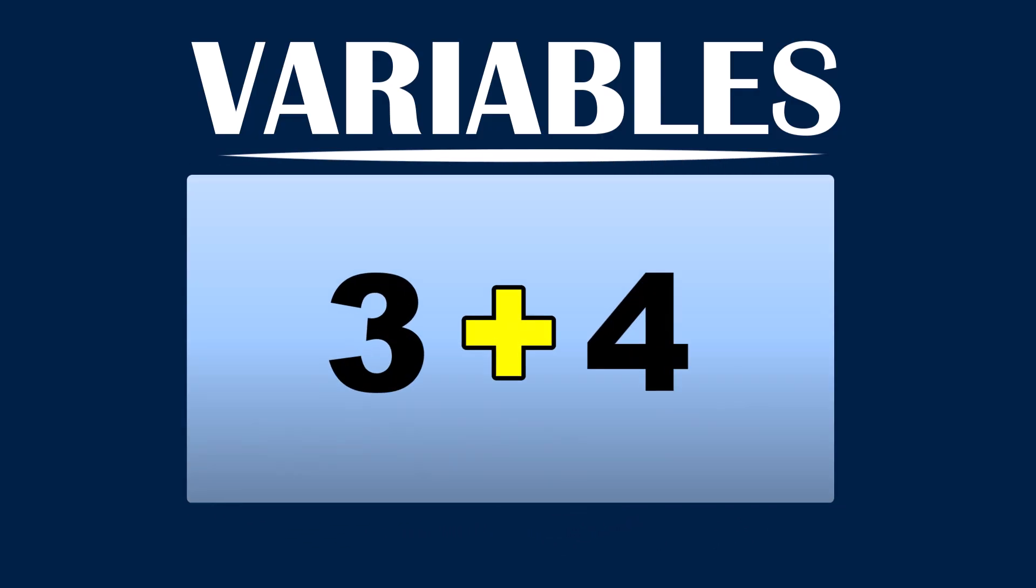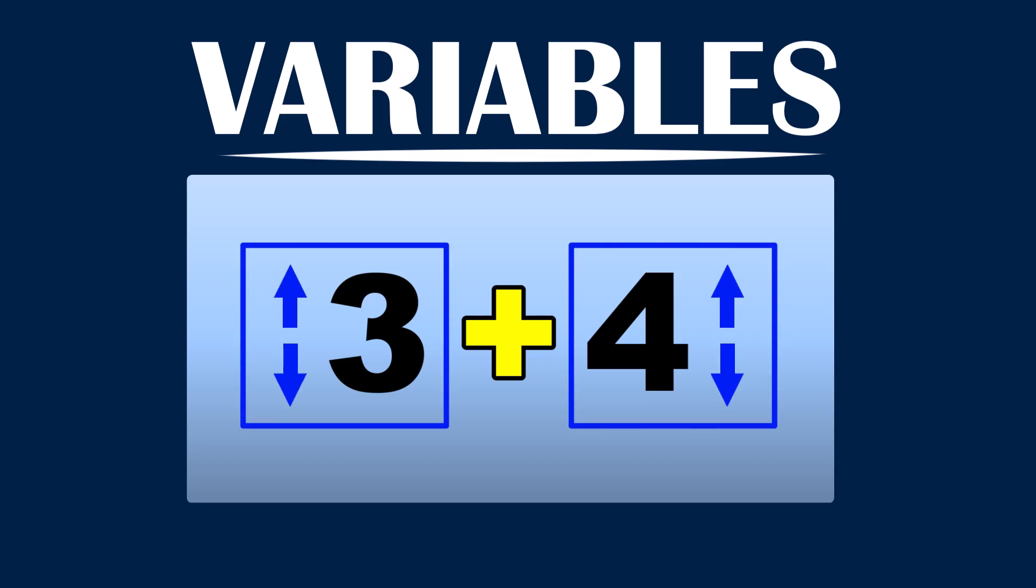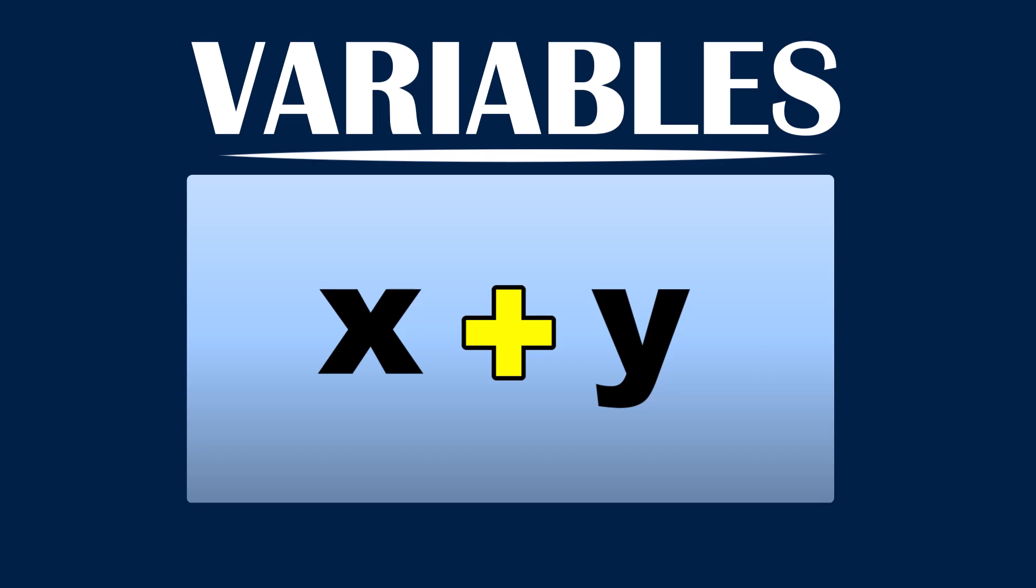For example, in the expression 3 plus 4, the value of both sides of the addition, 3 and 4, are fixed numbers. That means there is no variable here. But if these values are subject to change because the calculation might be done for multiple scenarios, we use symbols, usually letters, as placeholders, like X plus Y.